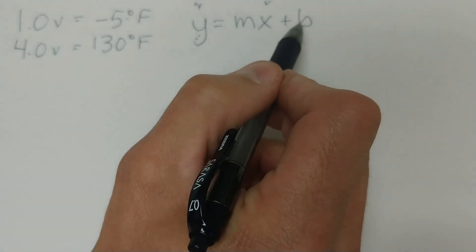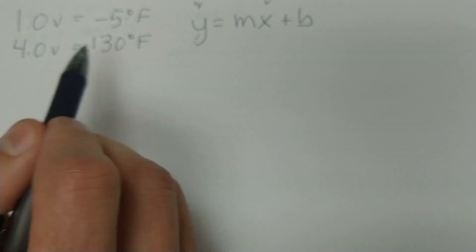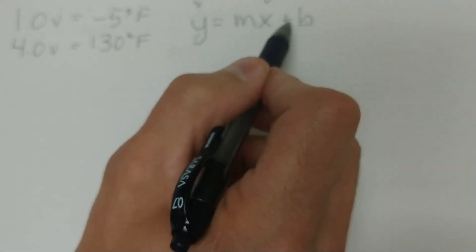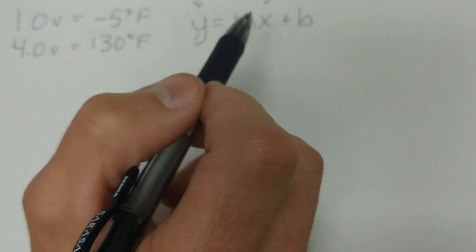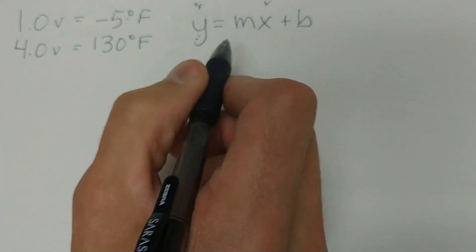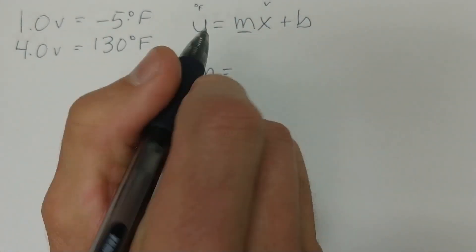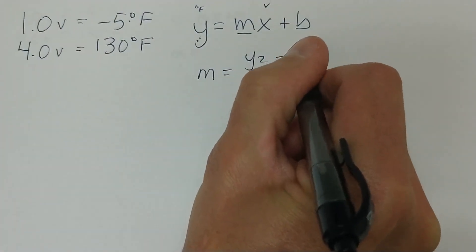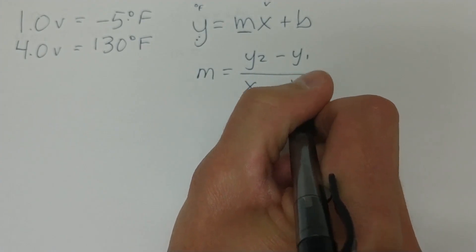B ends up being an offset. So if, for example, zero degrees does not equal zero volts, then we're going to have to adjust that either up or down to compensate and that's what the B is. So to start out, we need to solve for M. M equals Y2 minus Y1 over X2 minus X1.